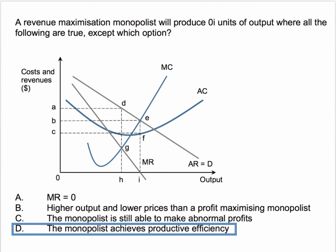Any more production means that marginal revenue becomes negative. So if they went beyond output OI, total revenue would fall. It also produces at a higher output level than a profit maximising monopolist — the output level of profit maximisation is H. So the output at I is higher and the price will be lower in a monopoly. So B is correct.